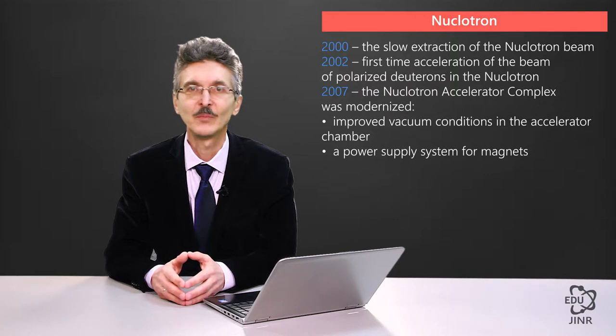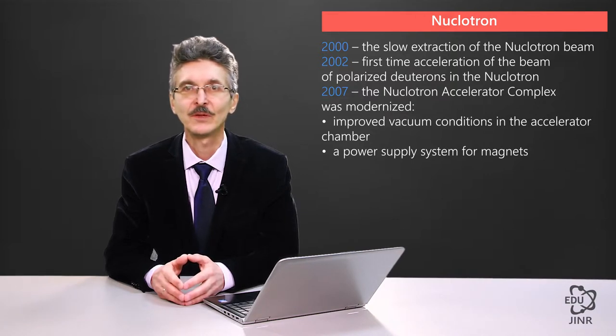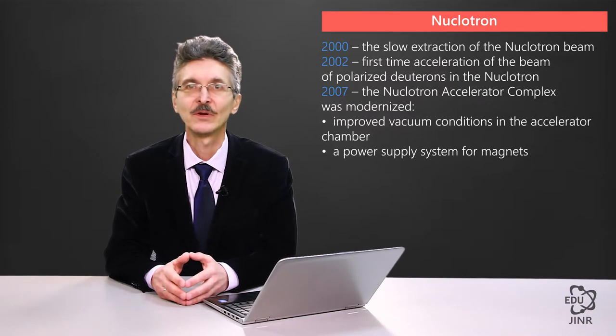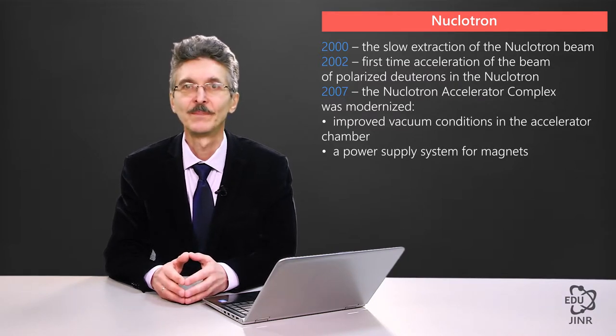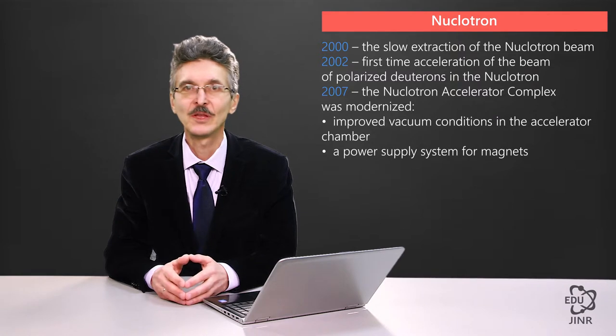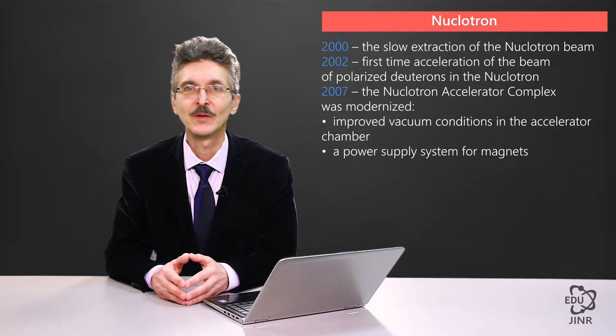Several runs on the heavy ion acceleration were held with the heaviest ions accelerated at the nucleotron, xenon ions, having an atomic mass greater than 100. The only restriction in relation to the variety of ion types accelerated at the nucleotron was, thus far, the injection chain.